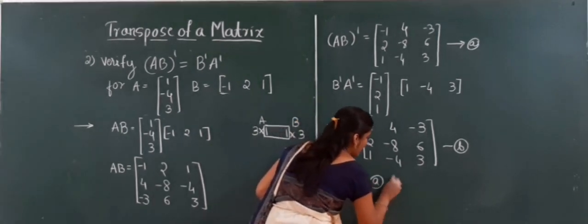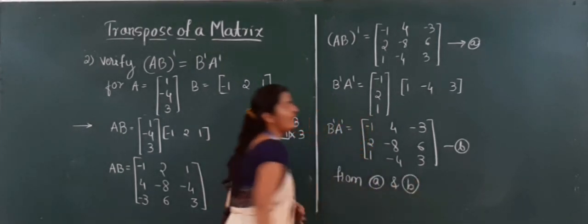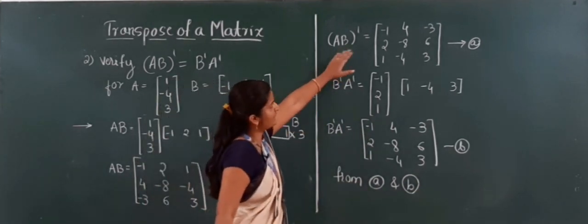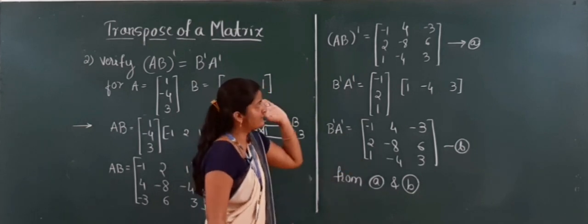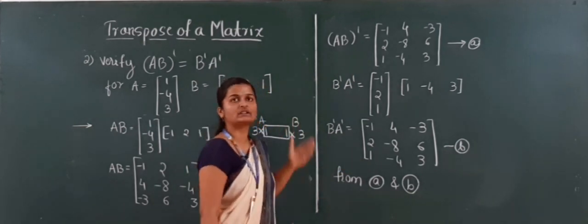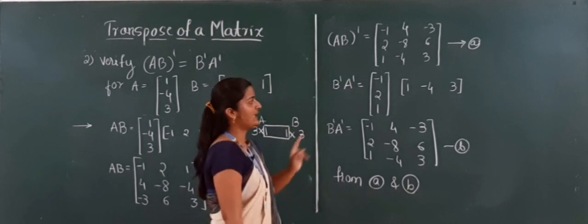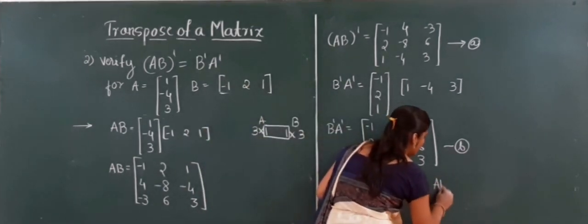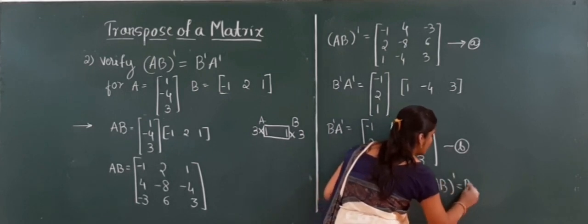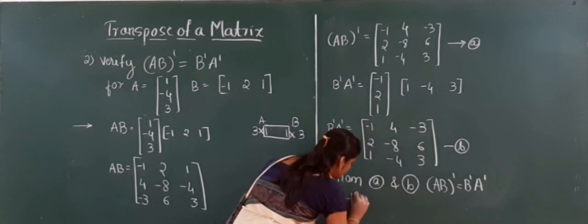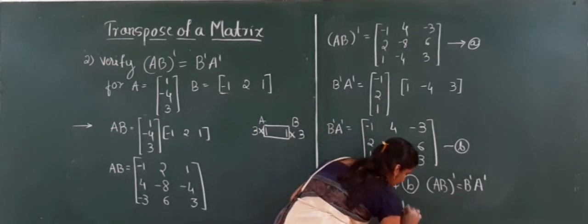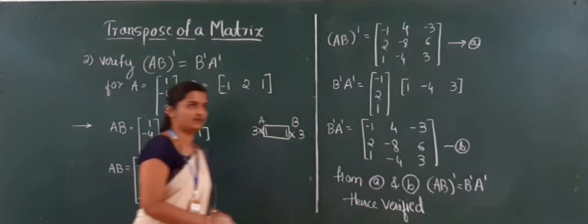Comparing the two results: (AB)' is a 3 by 3 matrix and B'A' is also a 3 by 3 matrix. Checking each element — both matrices are identical. Hence we have verified that AB transpose equals B transpose into A transpose.